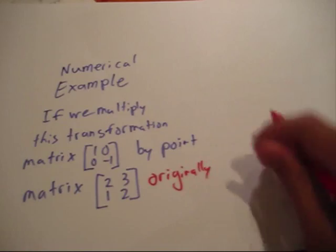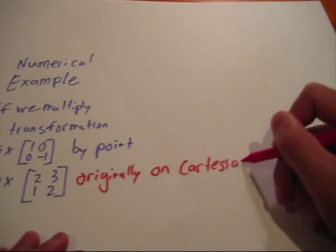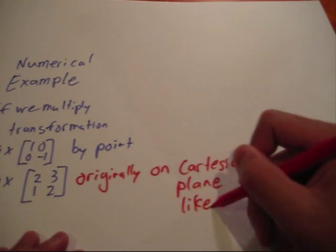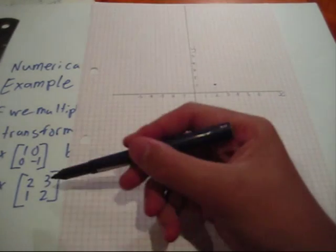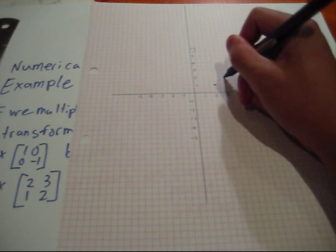Which, on the Cartesian plane, would look something a lot like this. Now, the 2, 1 would be represented by that dot, and the 3, 2 by this one.